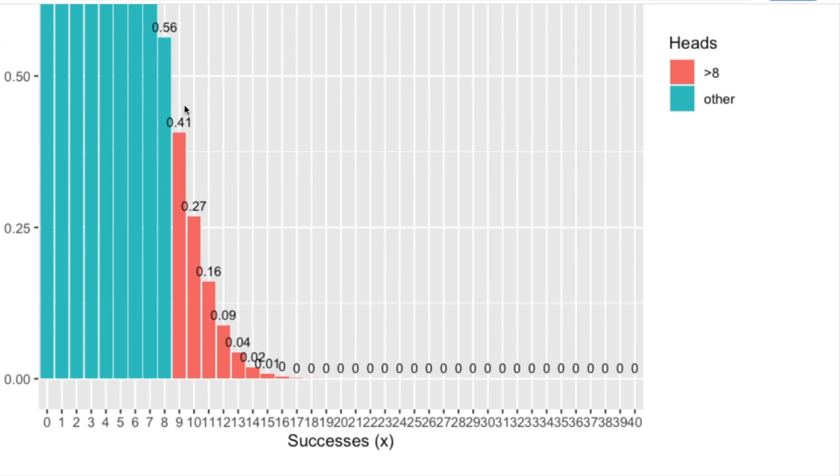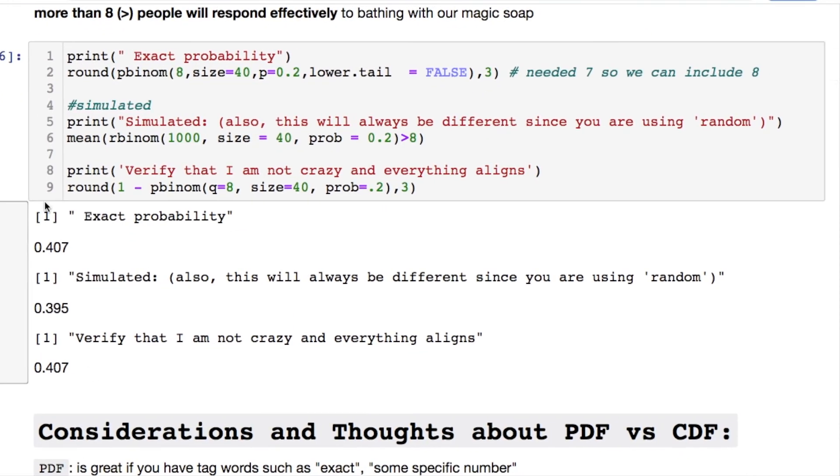That nine or greater of these people will respond favorably to using it, considering there is a 20 chance that they want to use the soap in the first place. Then we got our same little digits here.